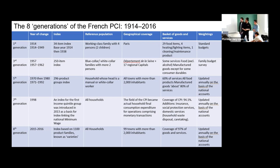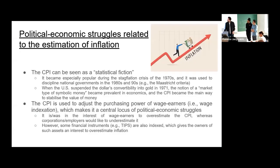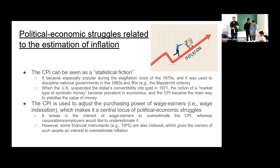I'll now pass it on to Austin. When we read this paper, we identified three key themes: the historical narrative, the social conflicts over how to estimate inflation — which I'll discuss — and the technical problems of estimating inflation, which Jen will address. As the professor explained, the CPI can be seen as a statistical fiction — a social construct that develops as different social groups and forces struggle over how it should be estimated.